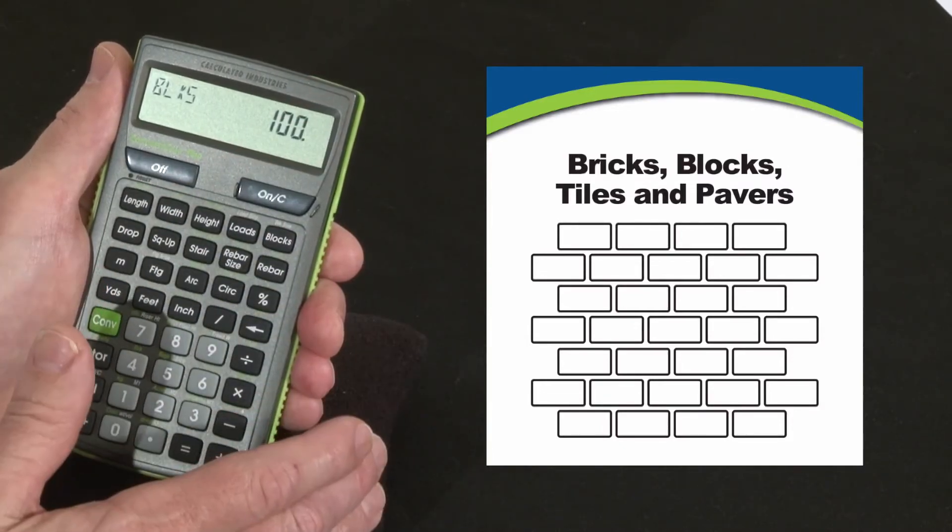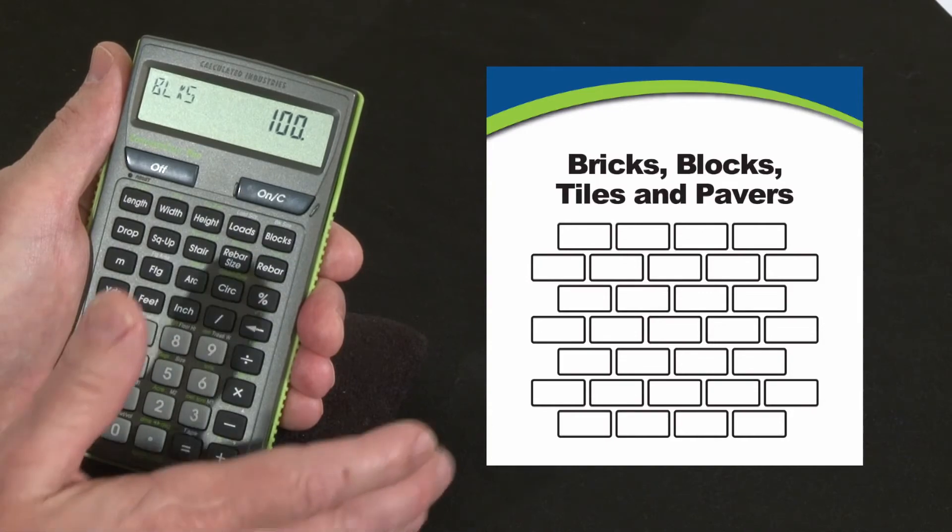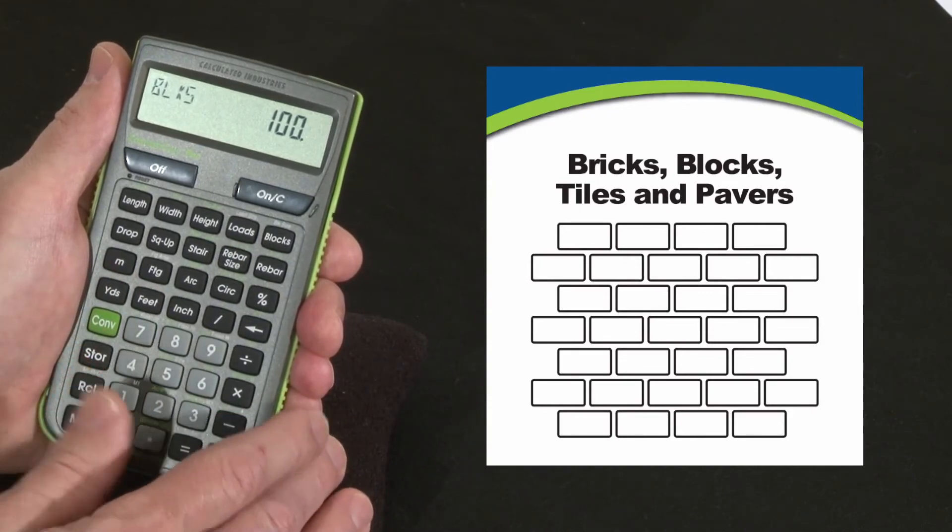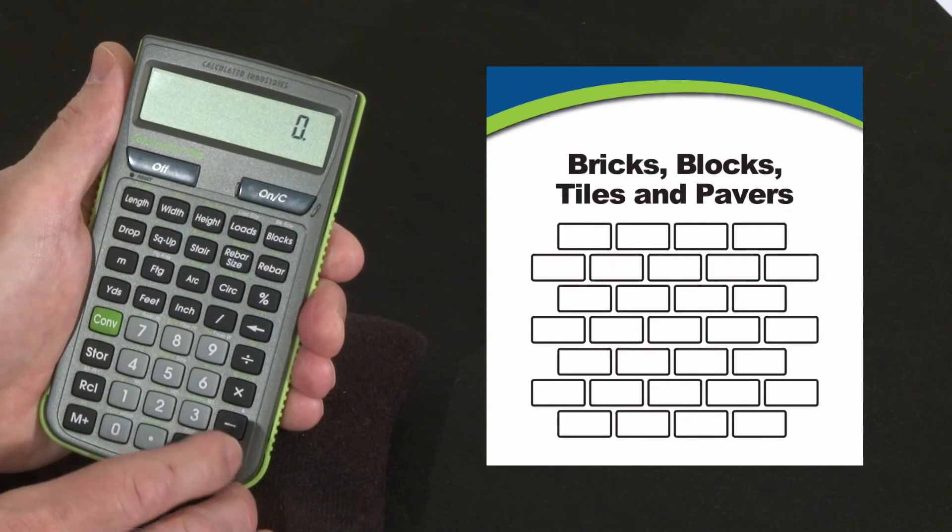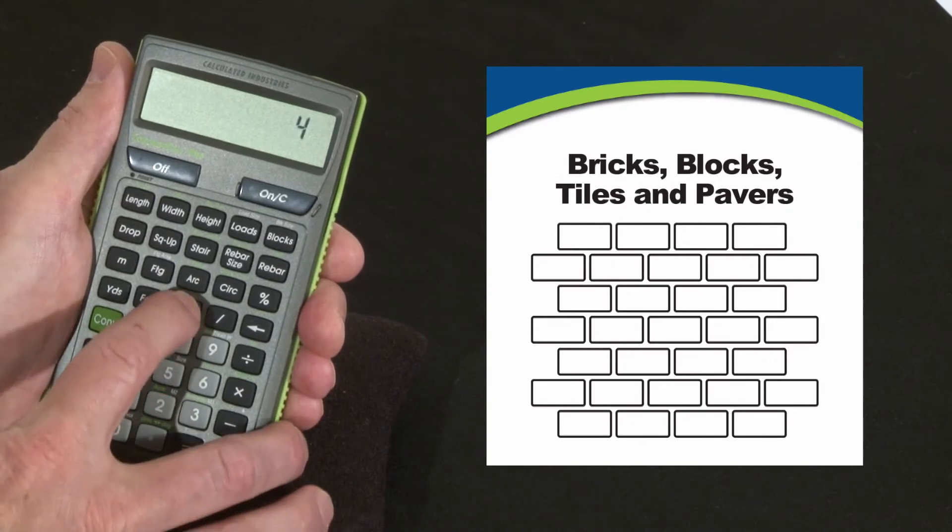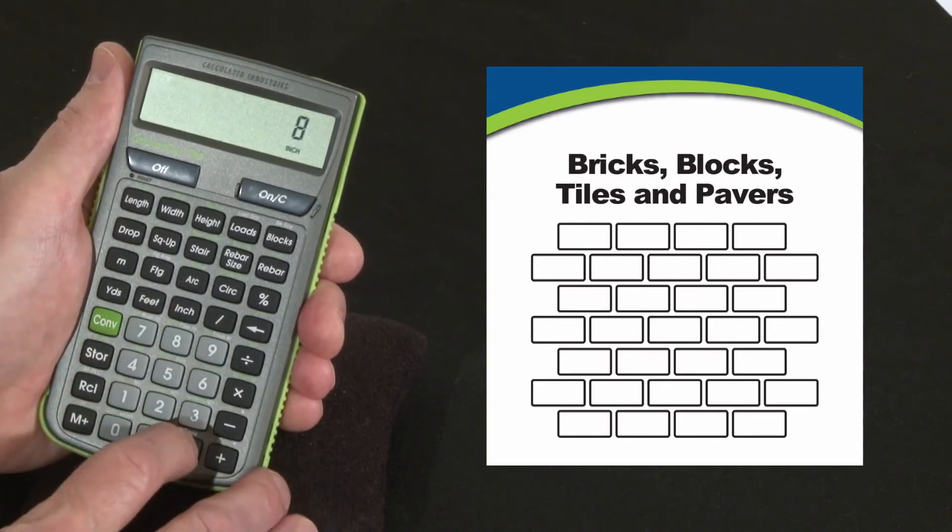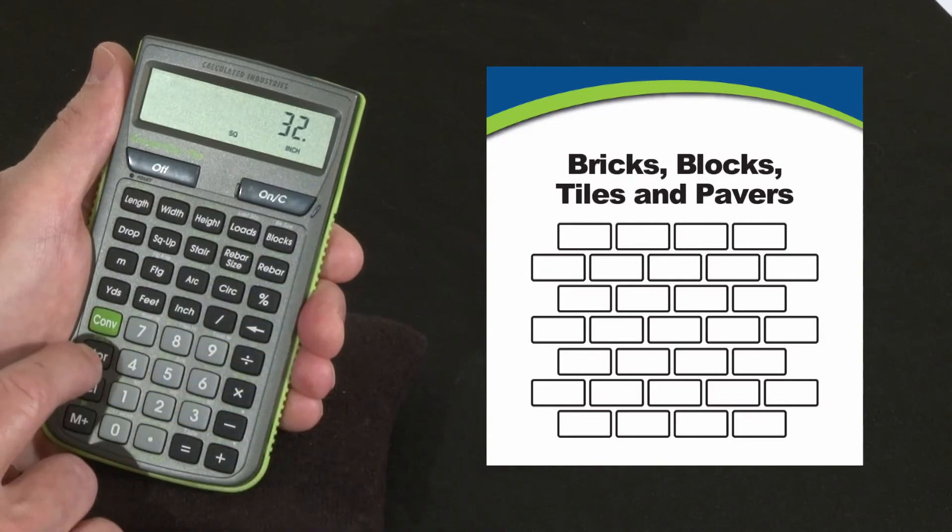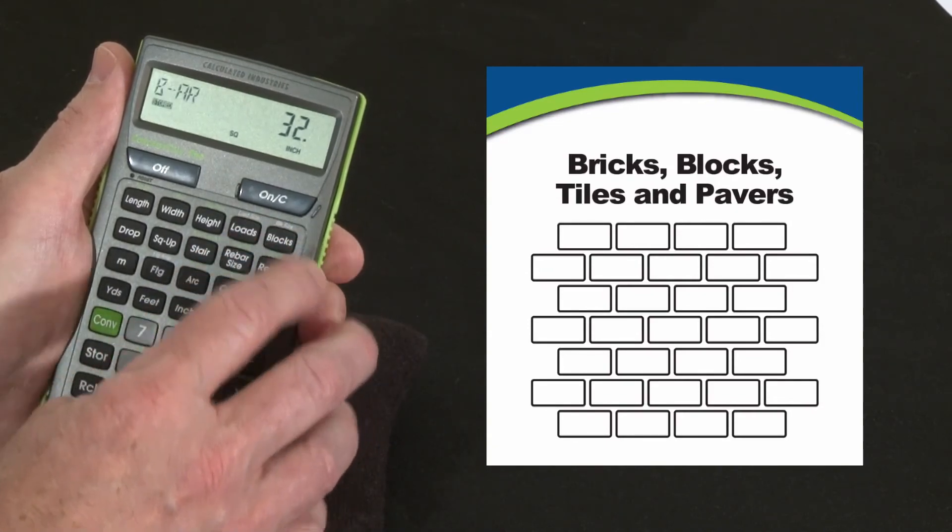Now say we're going to do a patio. It's using 4 by 8 inch pavers. It's a 10 by 10 patio. So we know 4 by 8 is 32 square inches, but we're going to calculate it. 4 inch by 8 inch equals 32 square inches. Now let's store that as our block size. It's stored.